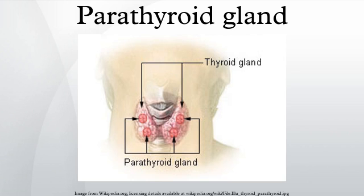Parathyroid hormone and calcitonin have key roles in regulating the amount of calcium in the blood and within the bones. The parathyroid glands share a similar blood supply, venous drainage, and lymphatic drainage to the thyroid glands.